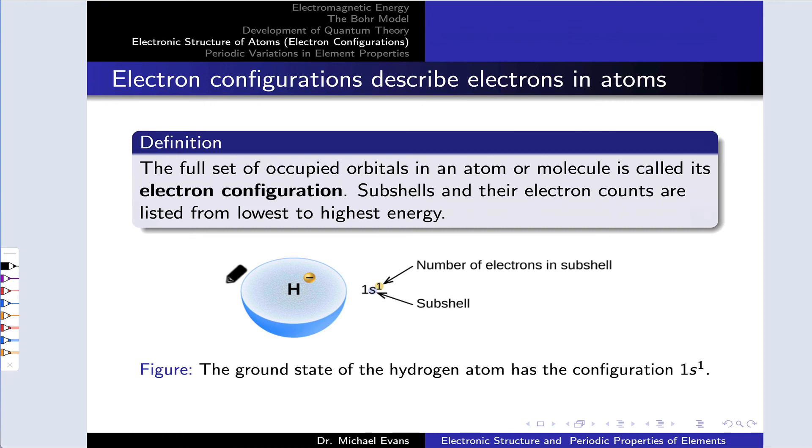As interesting as the hydrogen atom is, we really want to gain some insight into atomic structure for the heavier atoms as well. There are over a hundred other elements on the periodic table. As we move to heavier atoms, we're going to start having to use multiple subshells in most cases.